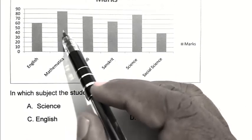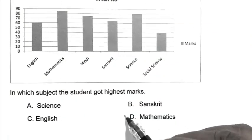From the graph, it clearly shows that the student got highest marks in mathematics. So D is the right answer.